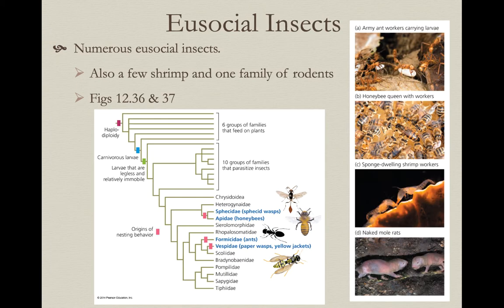Eusociality is fairly common in insects. It can be seen in many cases in Hymenoptera — ants, bees, and wasps. It can also be seen in termites and isopods. But it's also seen in other arthropods like some crustaceans, like these shrimp that are shown here. And it's even found in one group of vertebrates — the mole rats.